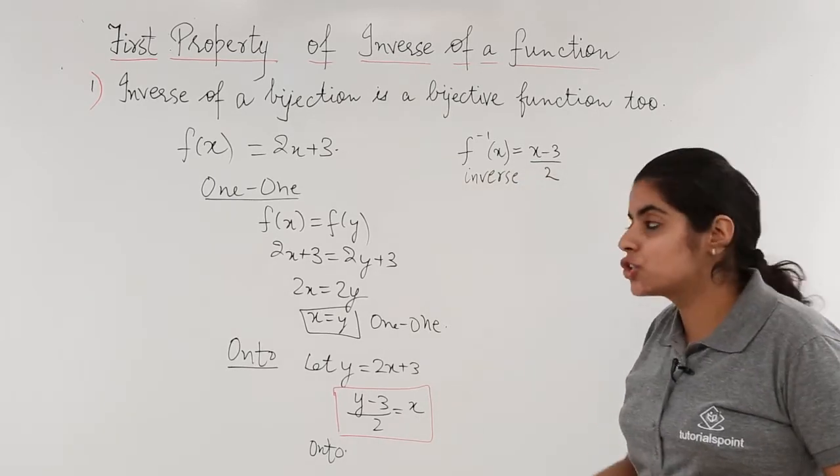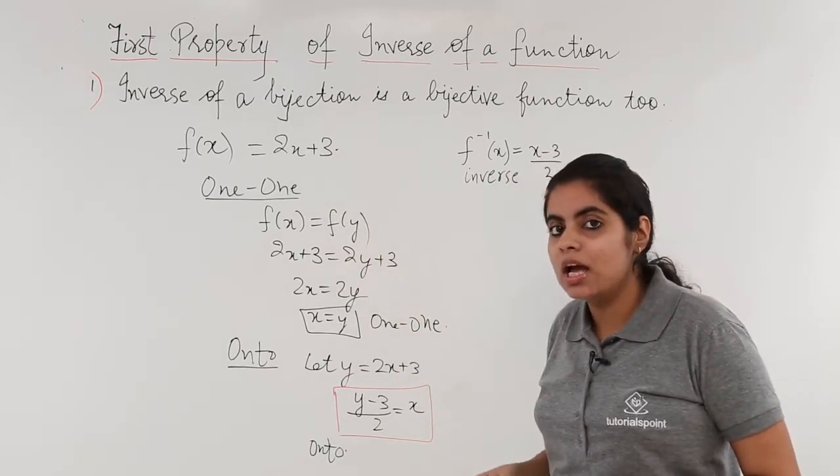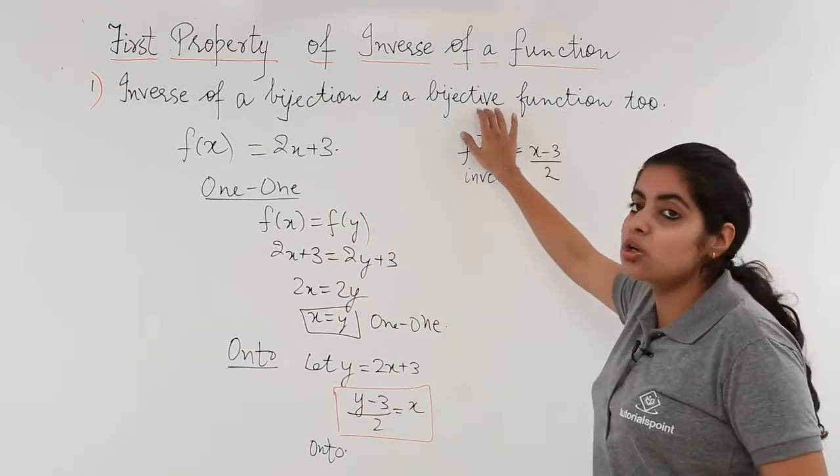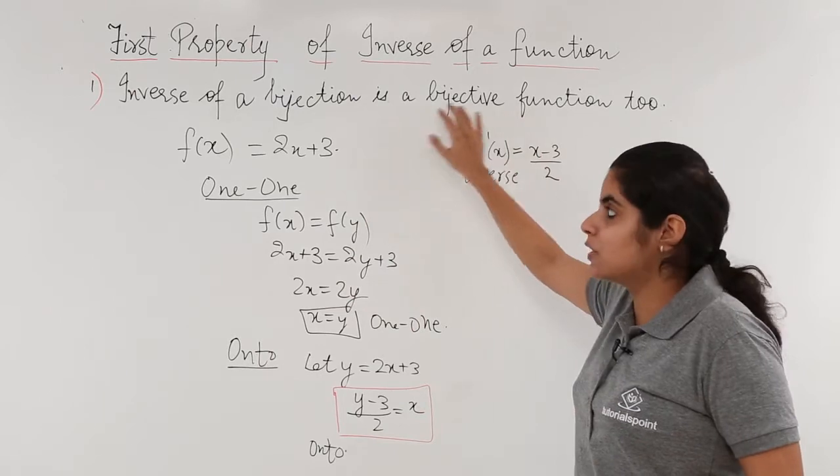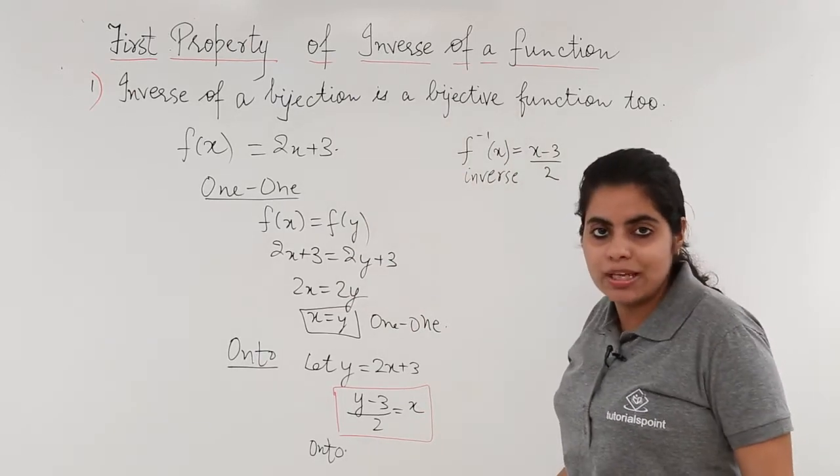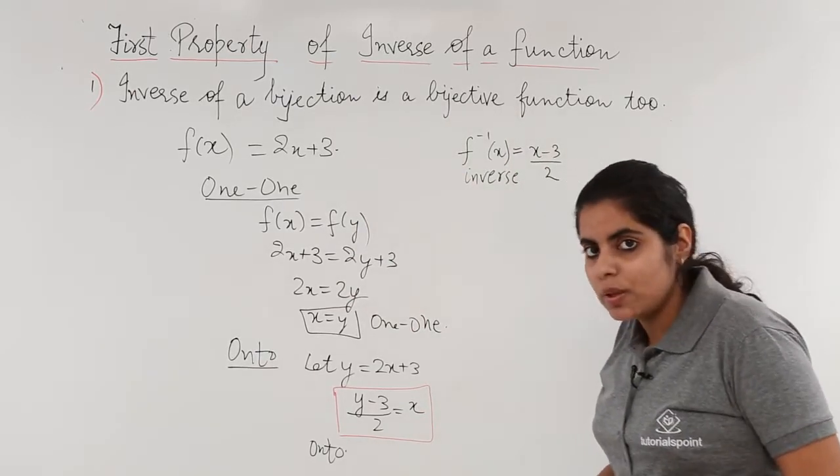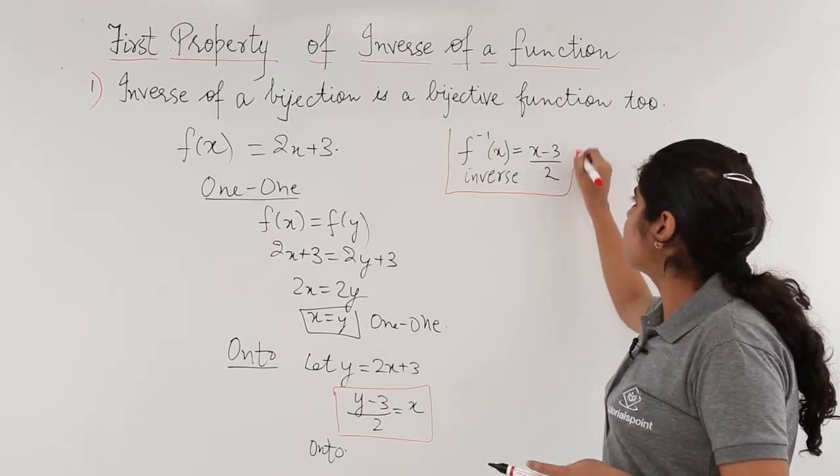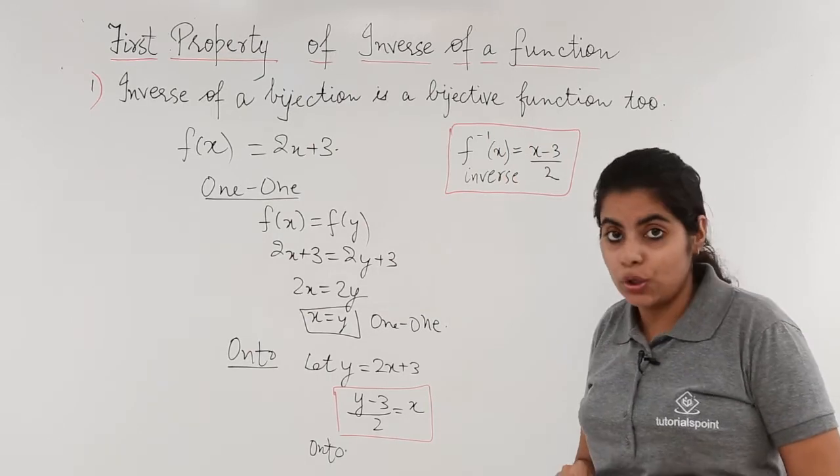Now I have my inverse as f inverse x. I have my function as 2x plus 3. What do I need to do? I need to check whether my inverse is also bijective or not. If it is bijective, this property is well proved with the help of an example. So I need to check whether the inverse which I have obtained as f inverse x is bijective or not.